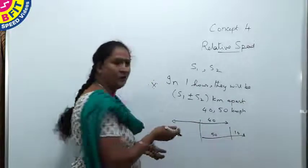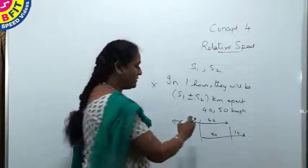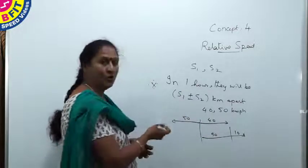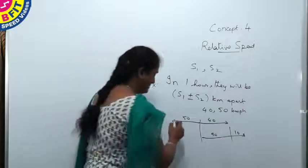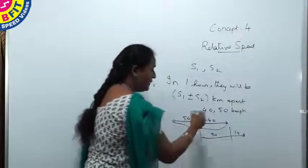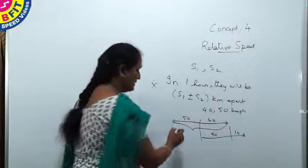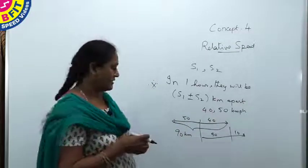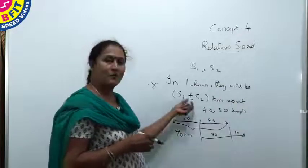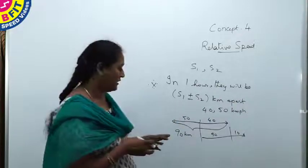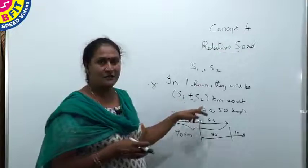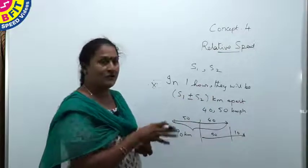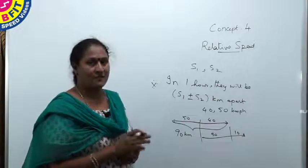If they move in opposite directions, this person covers 40 kilometers and the other covers 50 kilometers in the opposite direction. The distance between them will be 90 kilometers, so when moving in opposite directions the distance between them is the sum of their speeds. In one hour they will be S1 plus S2 kilometers apart. Based on this, we will work all train and boat questions.